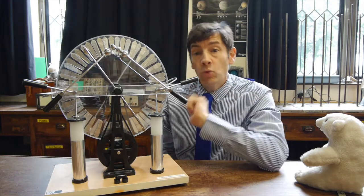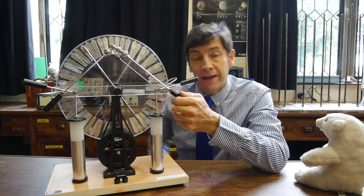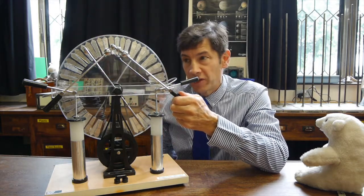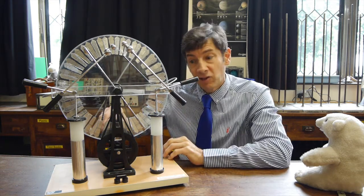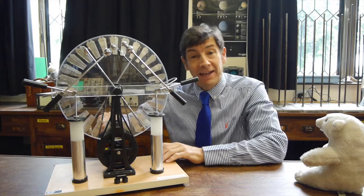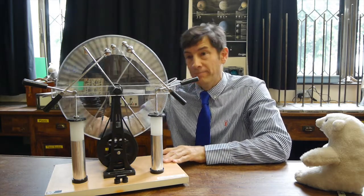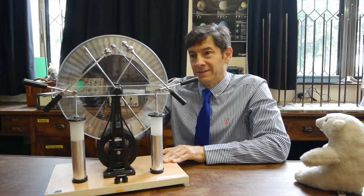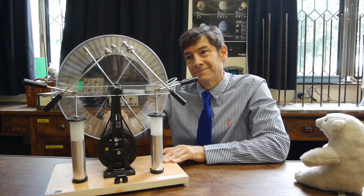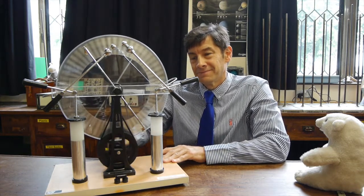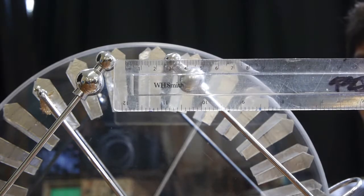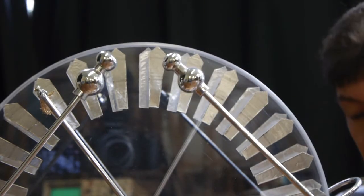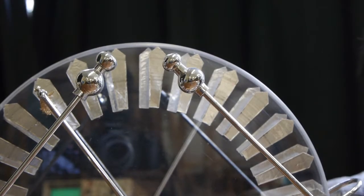So let's get it going. All we have to do is open the spark gap up here, and that's the bit you want to look at. I've got a handle that I'm going to crank on the back here and let's see if we can get some sparks to form. So I've got a bit of a close up of the spark gap here and I've got about a three centimetre gap. Let's see what happens now when I turn the wheel.